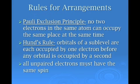Now, the exclusion principle says that no more than two electrons in the same atom can occupy the same place at the same time. And the Hund rule says that orbitals of a sublevel are each occupied by one electron before any orbital is occupied by a second. And lastly, for the rules for arrangement of electrons, all unpaired electrons must have the same spin. So let's look at an example of these rules.